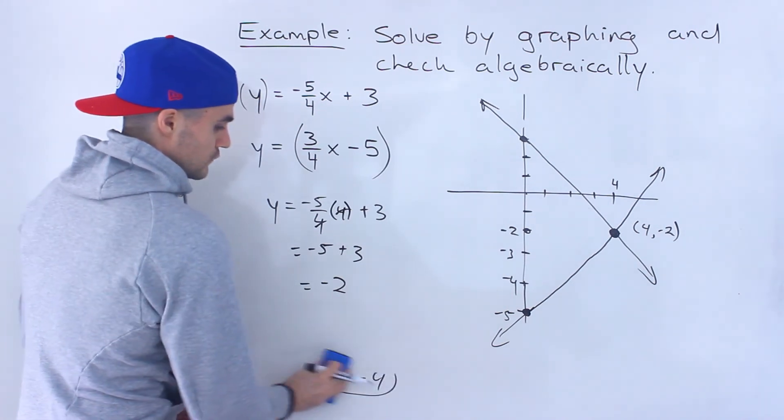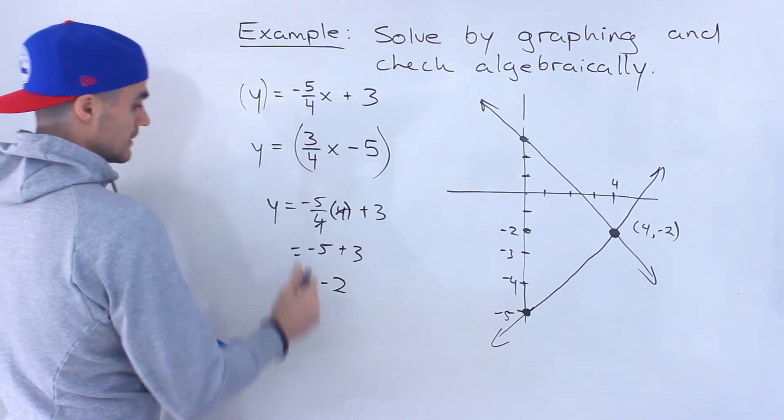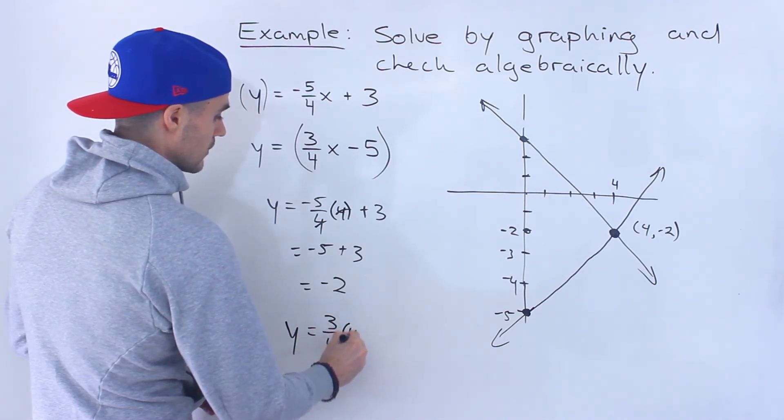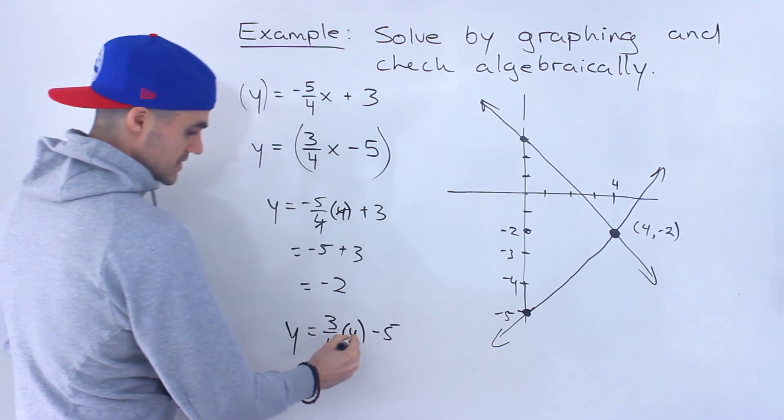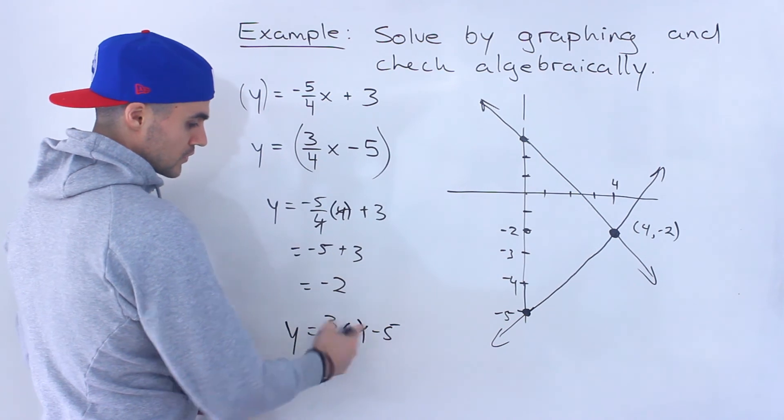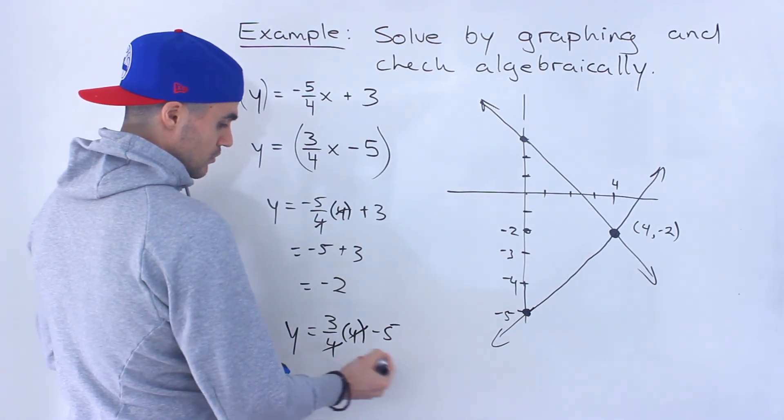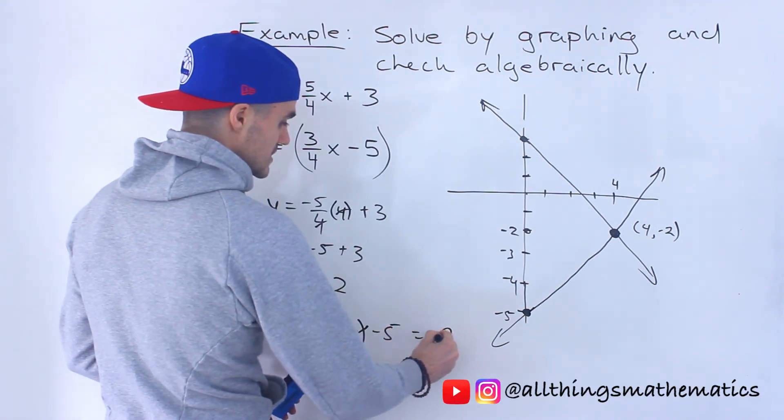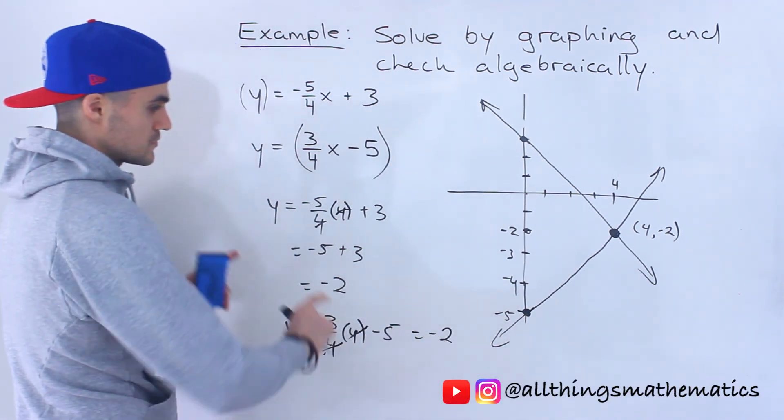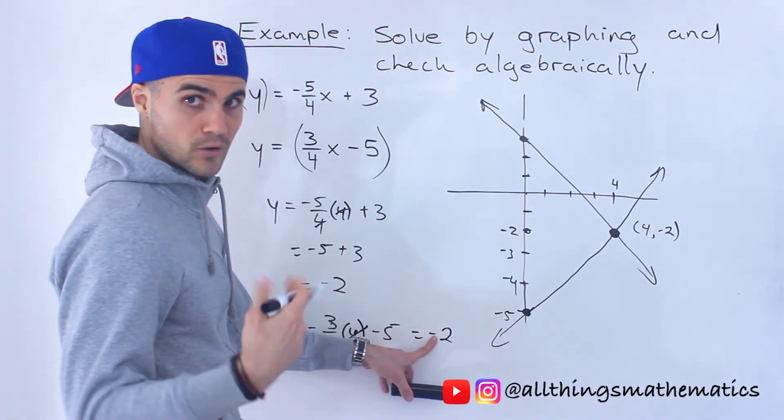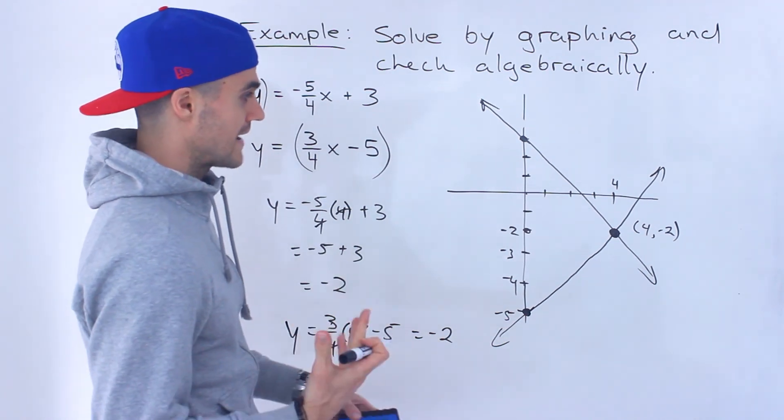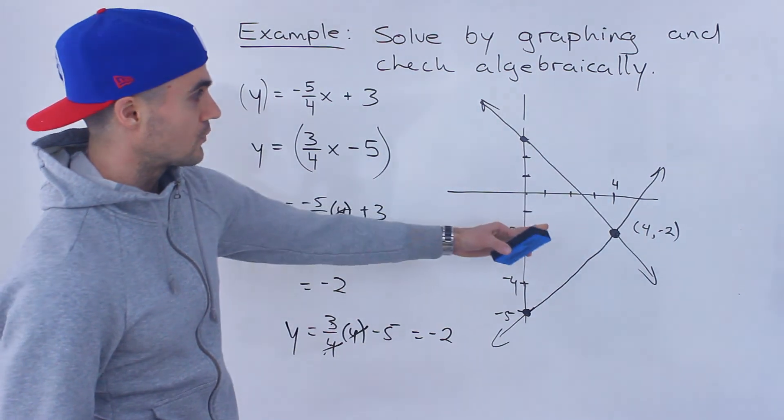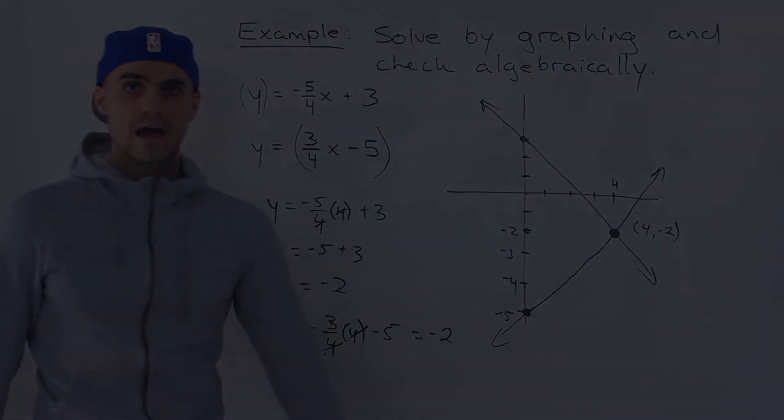And then if I take that x value of 4, if I plug it into the second line, we don't have to plug it into both. We just plug it into one of them. Notice here, the 4s cancel out. 3 over 4 times 4 ends up just being 3. We're left with 3. 3 minus 5 gives us negative 2. So whichever one we plug it into, we get that corresponding y value of negative 2 as expected, and we got that x value of 4. So we showed it graphically, and we showed it algebraically.